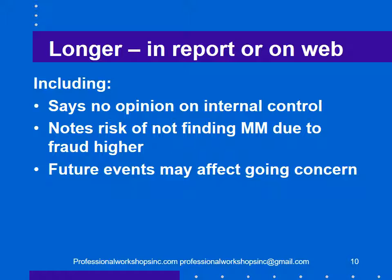That longer description includes: saying that no opinion is provided on internal control; noting that the risk of not finding a material misstatement due to fraud is higher than not finding one due to error; and a statement that future events may affect a going concern assessment. In other words, management's evaluation and our evaluation of that is based on information available as at the report date. If something happens after that which affects going concern — and often companies that become not a going concern do so because of an event that occurs long after the auditor was involved — there is nothing the auditor knew or could have done about it.